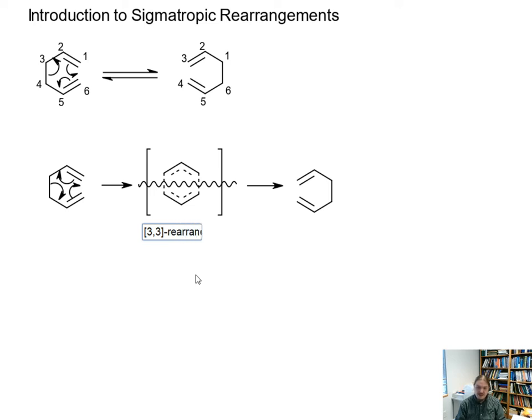And the reason why it's a [3,3]-rearrangement is because there are three atoms in each fragment that are kind of swapping positions. So there's one, two, three, one, two, three.